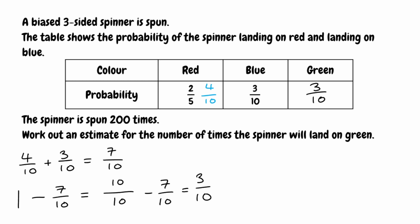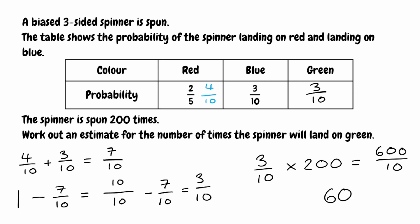To work out the estimate for landing on green, we take the probability of 3 tenths and multiply by 200. When multiplying a fraction by a whole number, we multiply the numerator by 200: 3 times 200 gives 600 over 10. Simplifying, 600 divided by 10 equals 60. So when the spinner is spun 200 times, we would expect it to land on green 60 times.